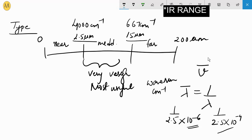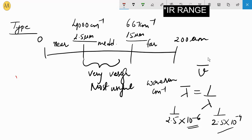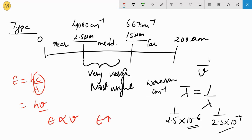E is equal to hc upon lambda, which is also known as nu, meaning frequency. E is directly proportional to nu. When energy increases, frequency increases. The opposite is true for lambda.